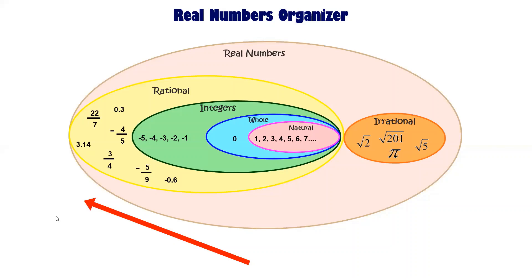You read this graphic organizer from the inside out, which means that a natural number can be a whole number. However, a whole number, such as zero, cannot be a natural number. It cannot go back — it has to go all the way out.